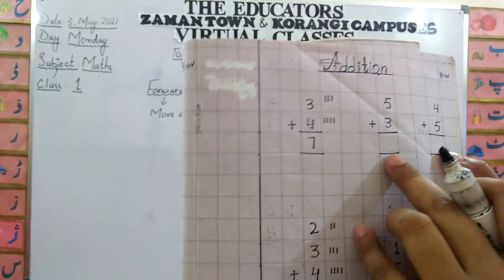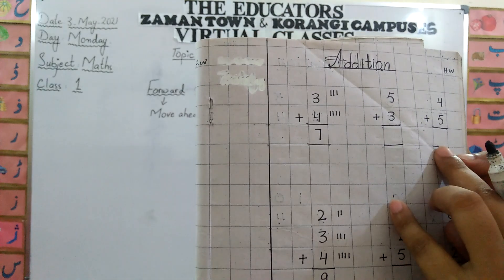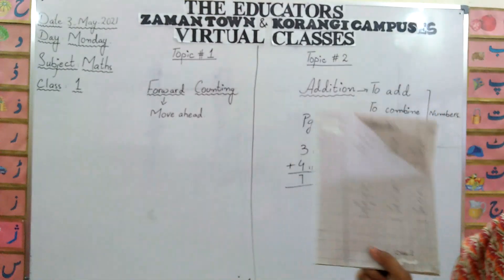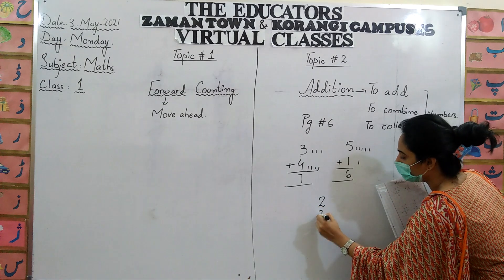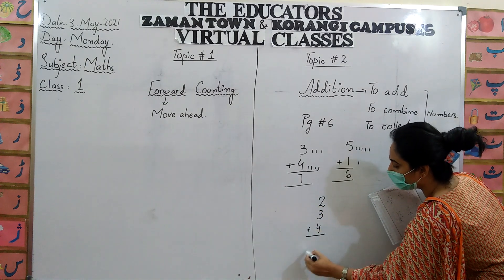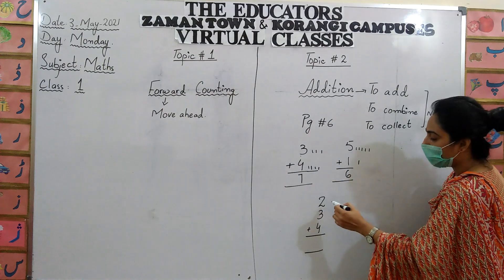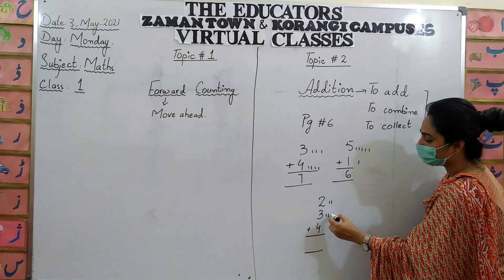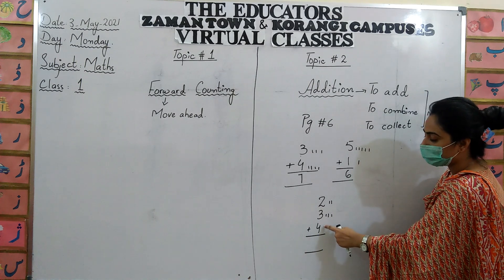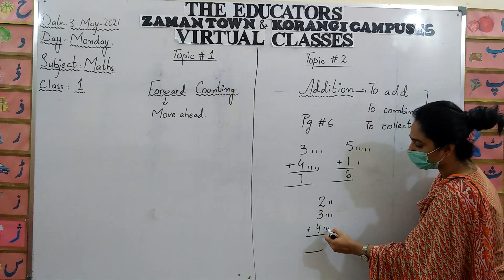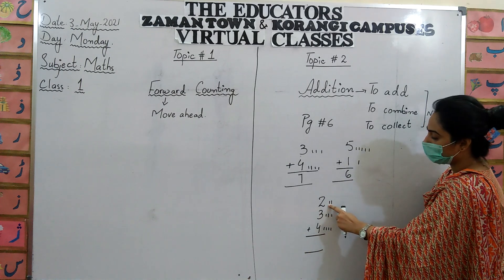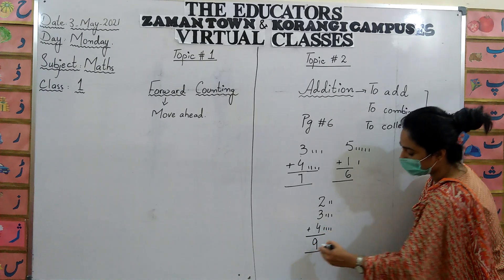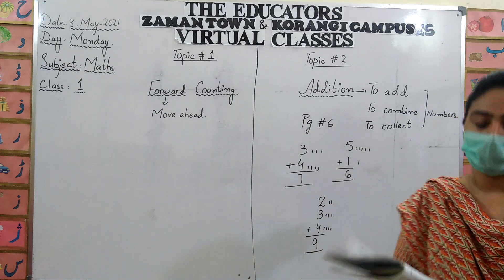Five plus three, you will solve by yourself. Four plus five, you will solve by yourself. Now there are three numbers: two, three, four. Draw two lines: one, two. Now draw three lines: one, two, three. And draw four lines: one, two, three, four. Now count with me: one, two, three, four, five, six, seven, eight, nine. Answer is nine. First draw the lines, then count them. For number two, draw two lines; for number three, draw three lines; for number four, draw four lines. Then add them all.